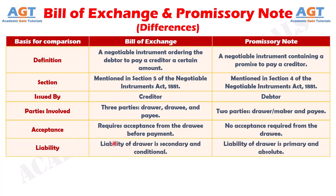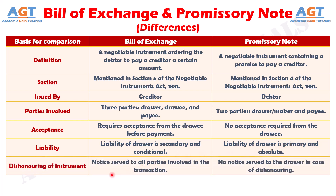Number six: The liability of the drawer in a Bill of Exchange is secondary and conditional, whereas in a Promissory Note the liability of the drawer is primary and absolute. Number seven: In the case of dishonoring a Bill of Exchange, notice is served to all the concerned parties involved.